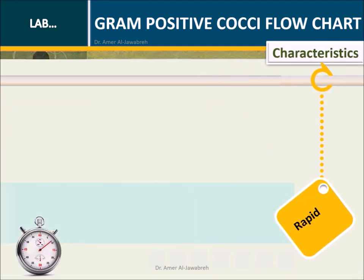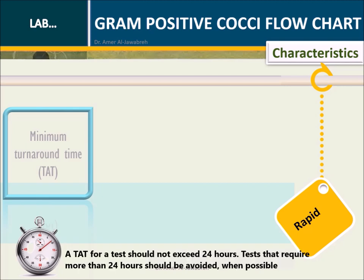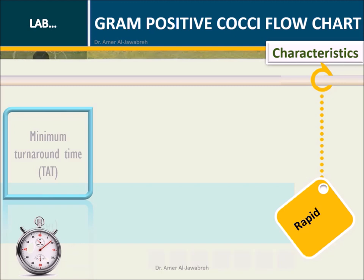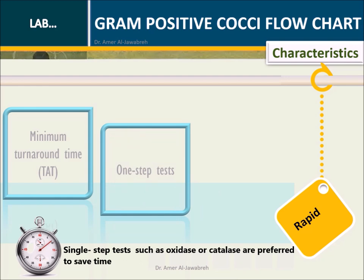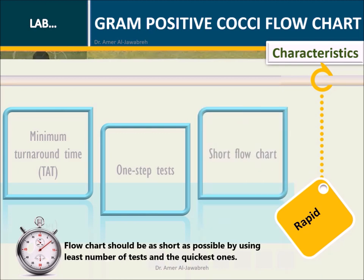Rapid — minimum turnaround time (TAT). TAT means the amount of time required to complete a test. Physicians expect a culture report from microbiologists usually within three days. A TAT for a test should not exceed 24 hours; tests requiring more than 24 hours should be avoided when possible. One-step tests such as oxidase or catalase are preferred to save time. The flowchart should be as short as possible by using the least number of tests and the quickest ones.